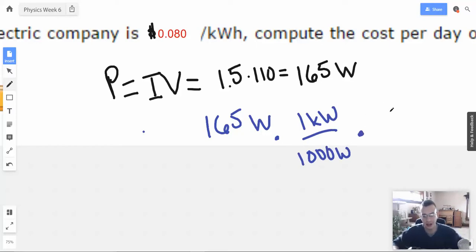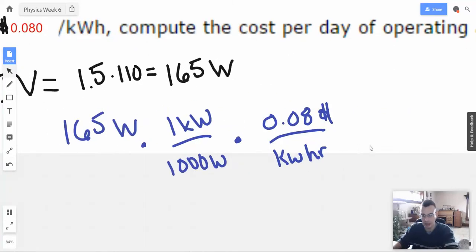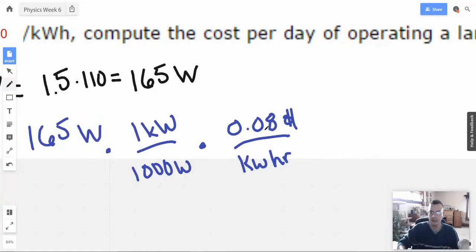And then we're going to have, let's see, we want kilowatts on the bottom, so we'll do one kilowatt hour over 0.08 dollars. Okay? We got that.